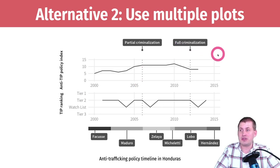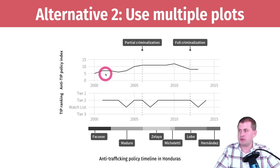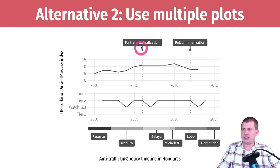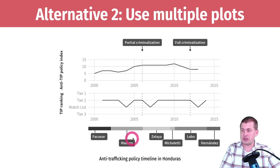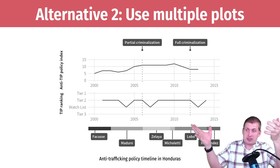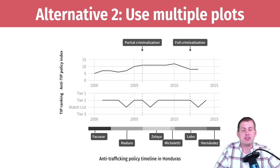By using multiple plots with actual scales, we can still show the alignment without the manipulation. This is technically four different plots: the policy index, the TIP ranking, a timeline of presidents in Honduras as a narrow plot at the bottom, and a label plot at the top. You can see things like full criminalization happening right in the middle of President Lobo's term. You get a rich, information-dense graphic without resorting to dual y-axes.